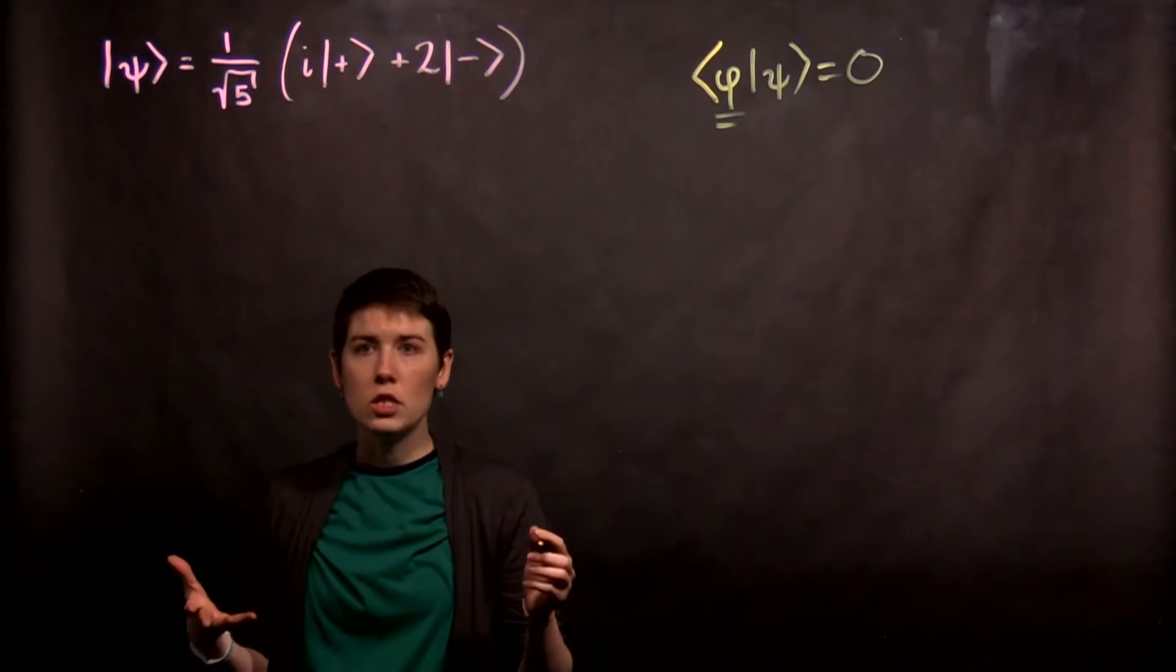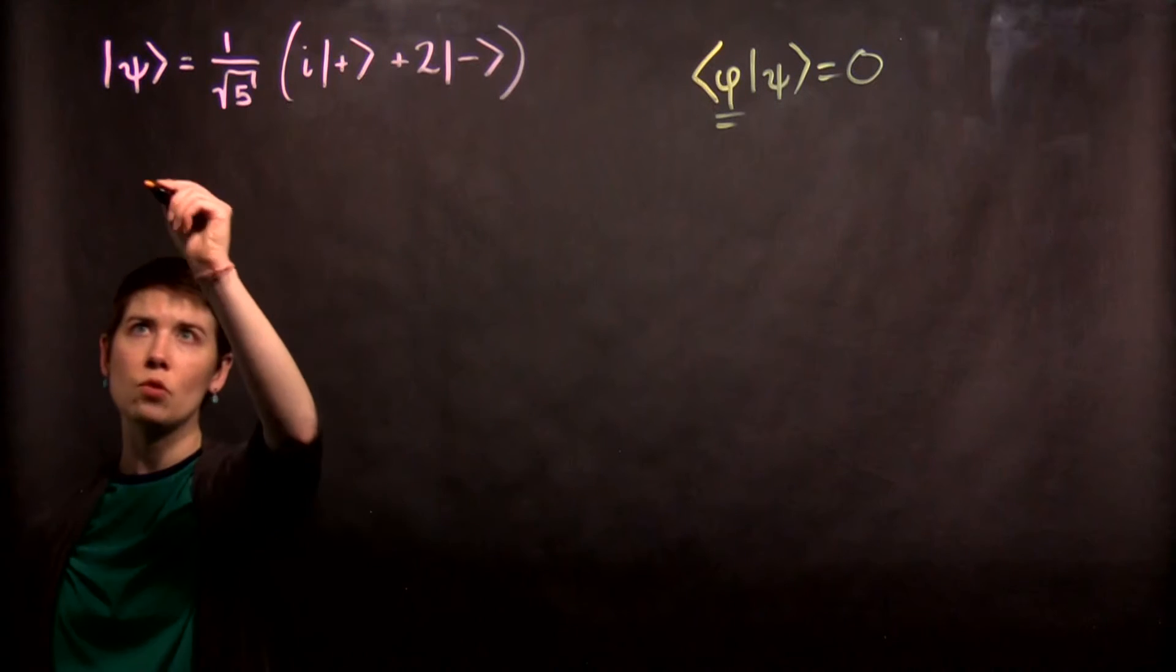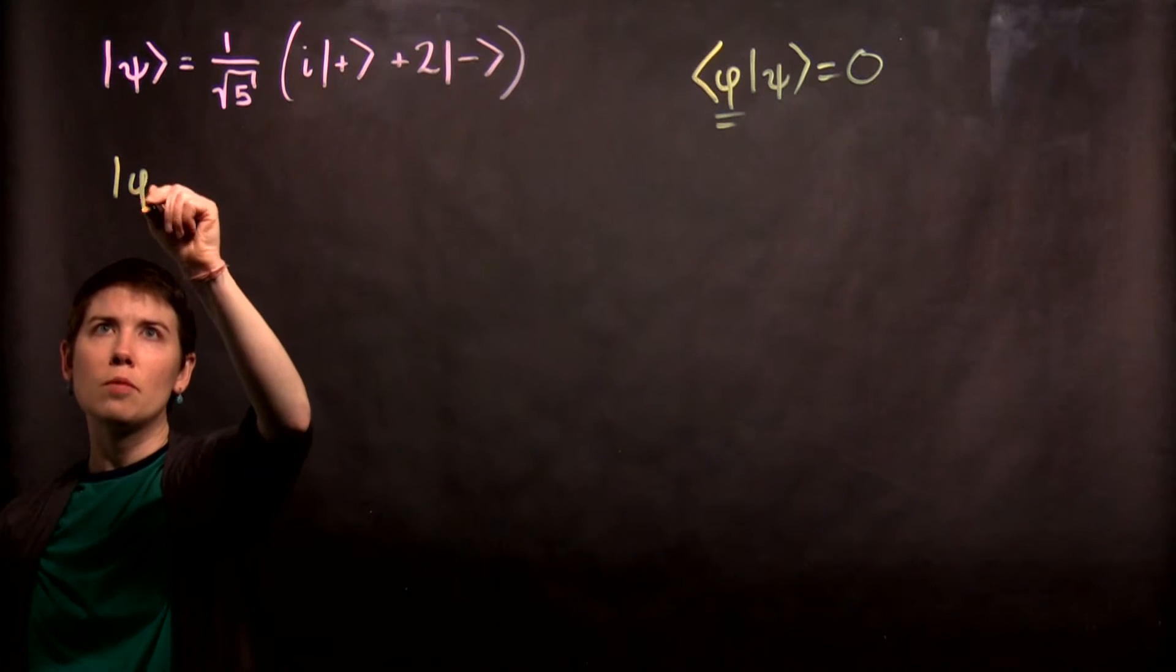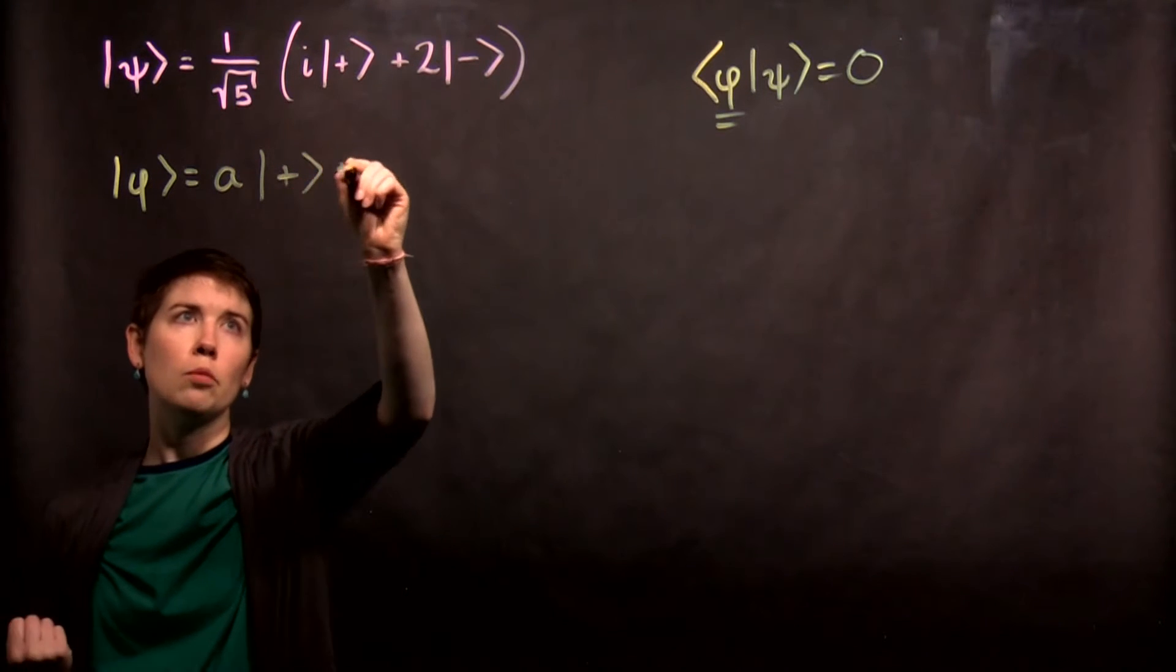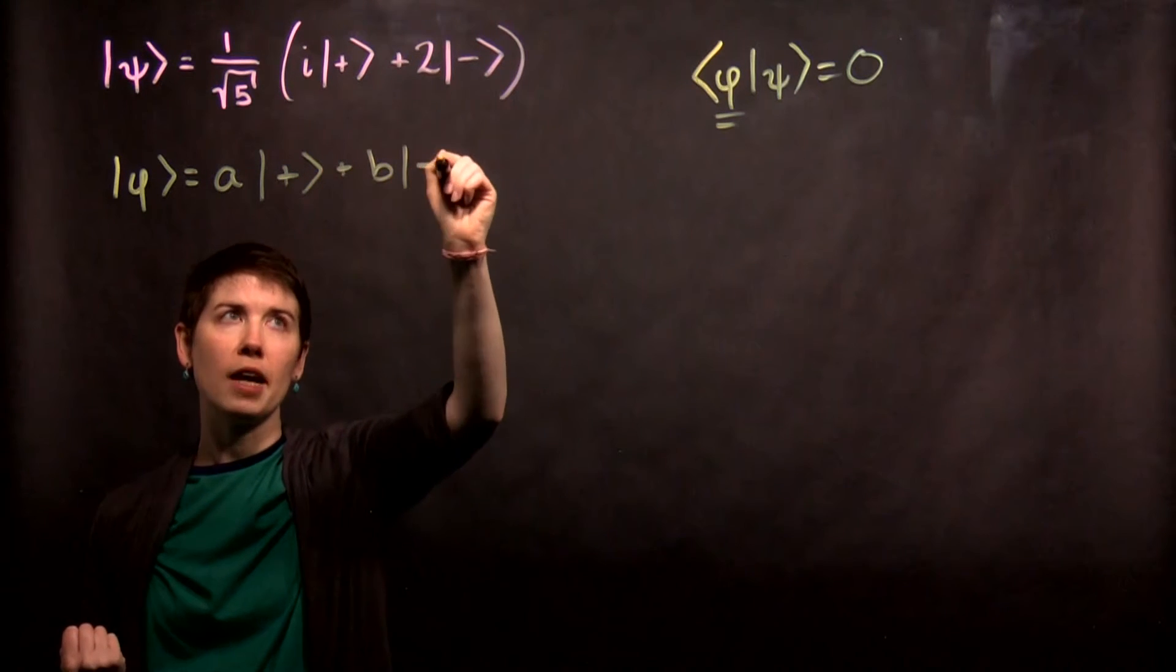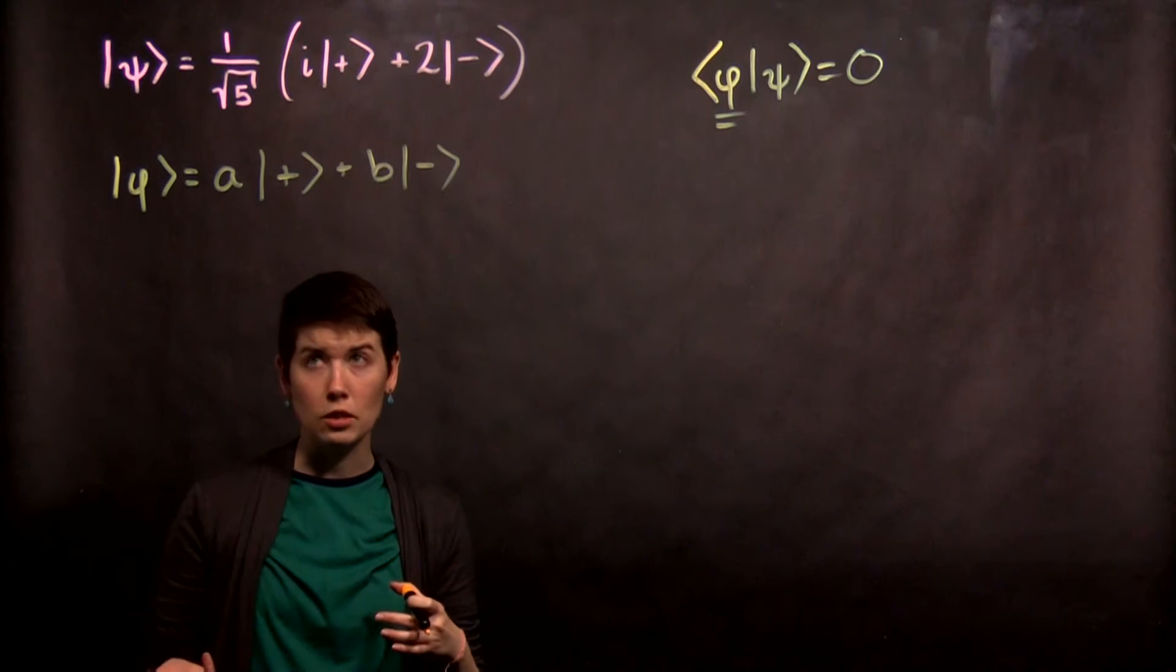So what we're going to do is start by assuming a general form and then we do the calculation to find the constraints. So if I start writing my state as a spin up plus b spin down, we know that there's going to be some overall normalization that we also need to do at the end.